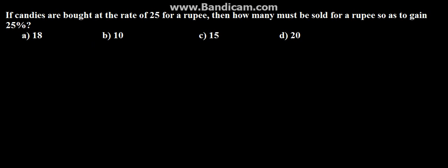Hello everyone, so the next problem in this series is: if candies are bought at the rate of 25 for a rupee, then how many must be sold for a rupee so as to gain 25%? So here we need to find the selling price of candy to get 25% profit. Options given are 18, 10, 15, and 20.